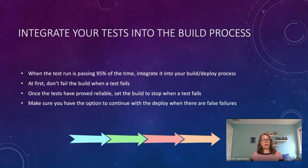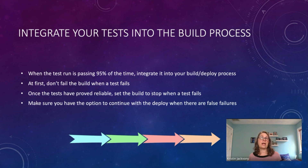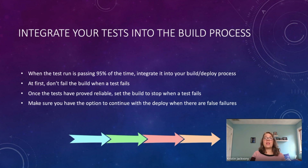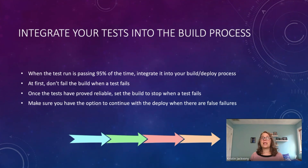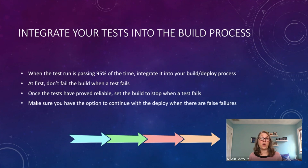When your test run is passing around 85-95% of the time, it's time to integrate it into your build and deploy process. When you first integrate it, don't fail the build when a test fails — that will just result in frustrated developers. Set it up so the tests run but don't fail the build. Once those tests have proved reliable, then you can set the build to stop when a test fails. At that point, developers should understand what's being tested, how the tests are set up, and how to fix a test they've broken.